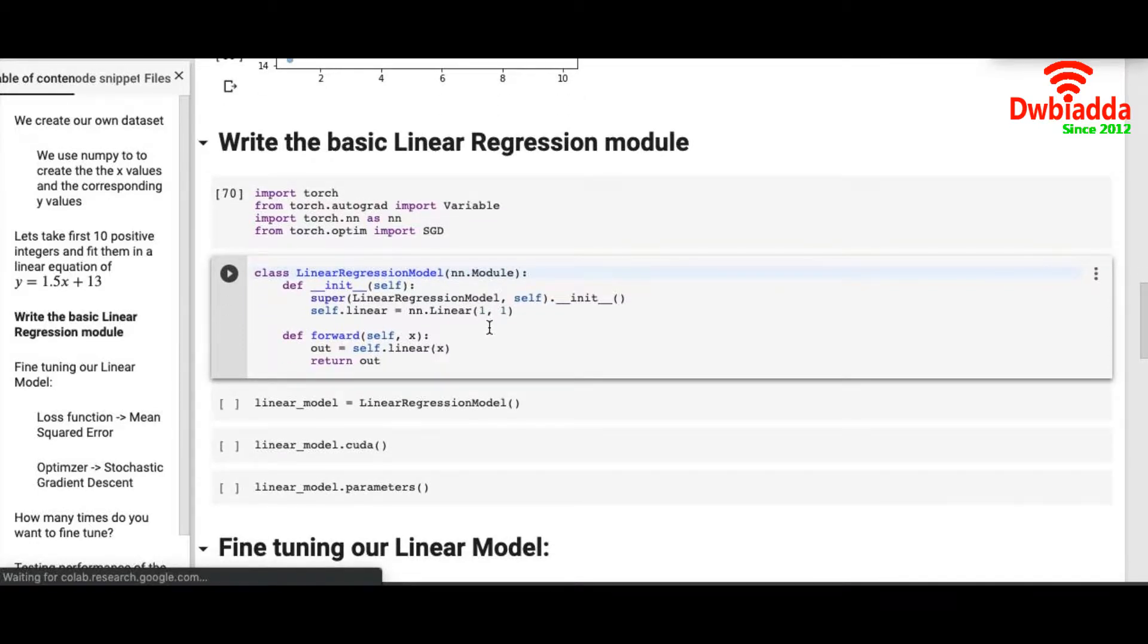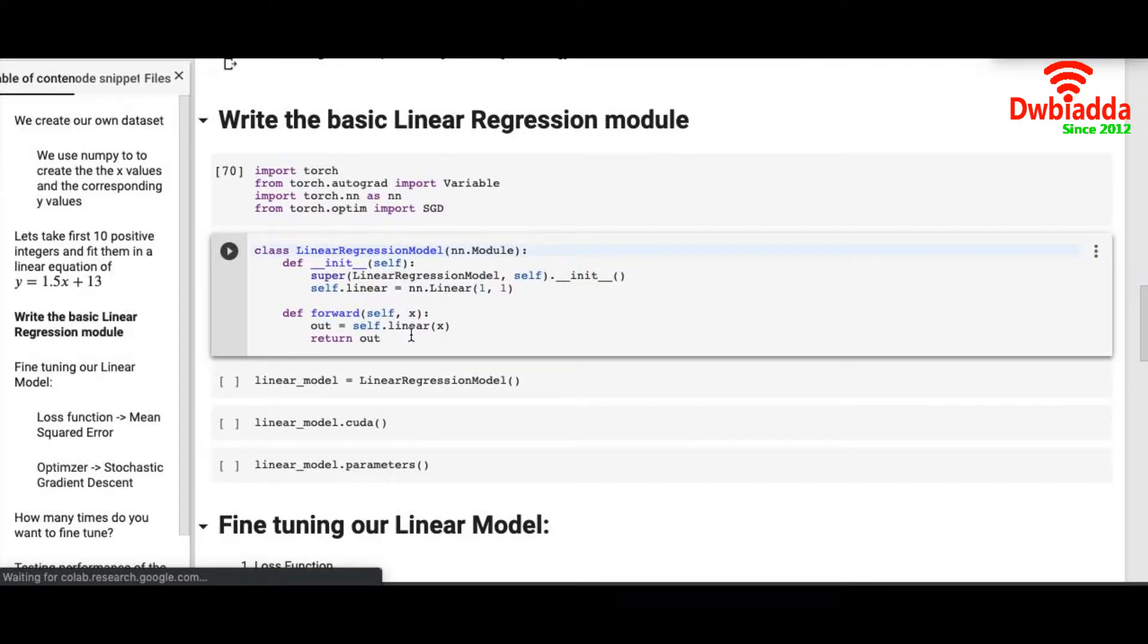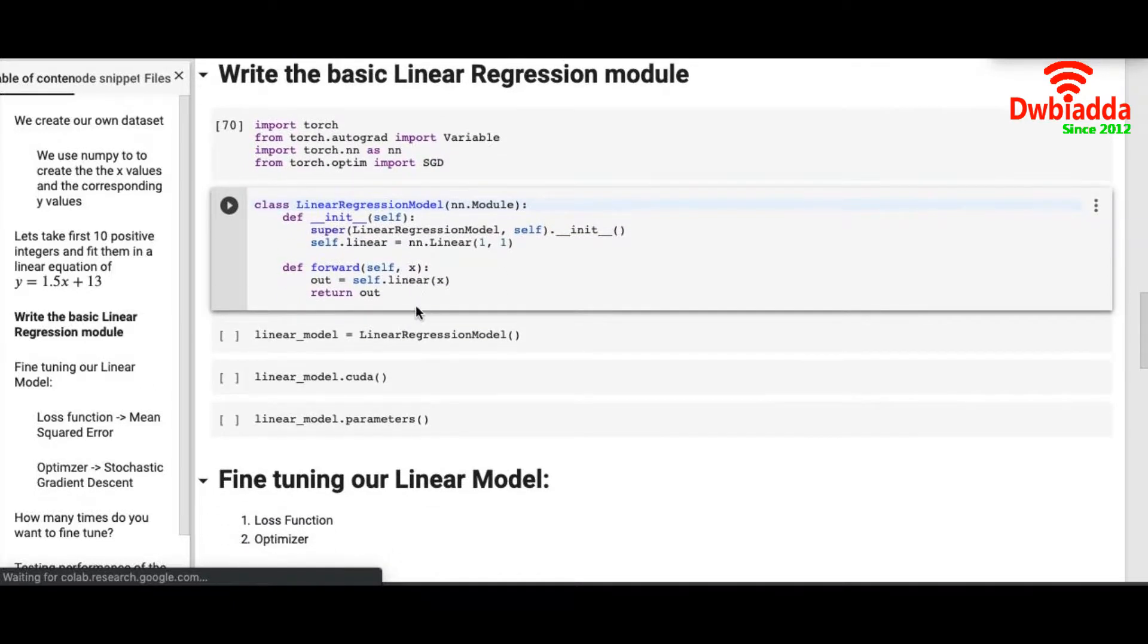Since we have only one dimension for input variable and one dimension for output variable we are calling nn.linear. The first one stands for input dimension, the second one stands for output dimension. And then we are declaring our forward pass that is basically calling this linear on the x.